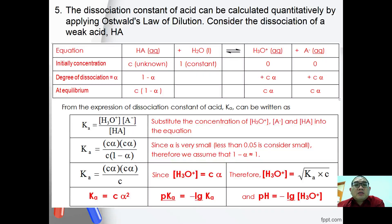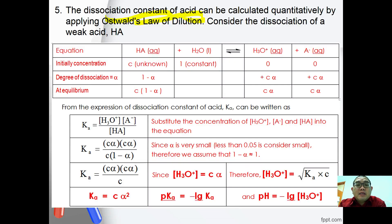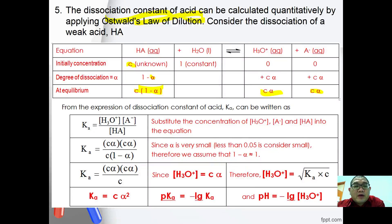The dissociation constant of an acid can be calculated quantitatively by applying Ostwald's law of dilution. Consider the dissociation of a weak acid: HA + H₂O ⇌ H₃O⁺ + A⁻, where C is the initial concentration of the acid and α is the degree of dissociation. At equilibrium, [HA] = C(1 − α), [H₃O⁺] = Cα, and [A⁻] = Cα.